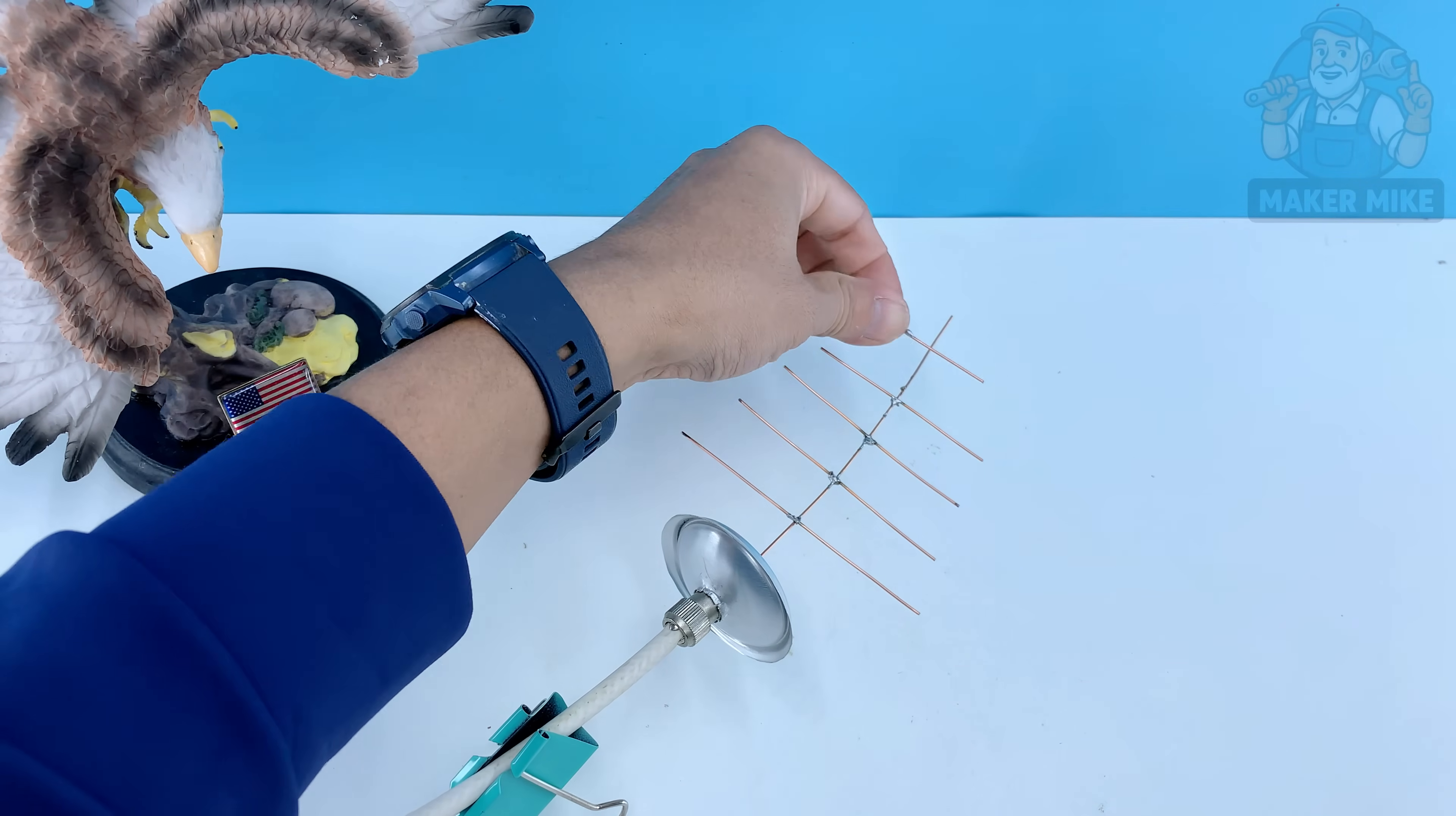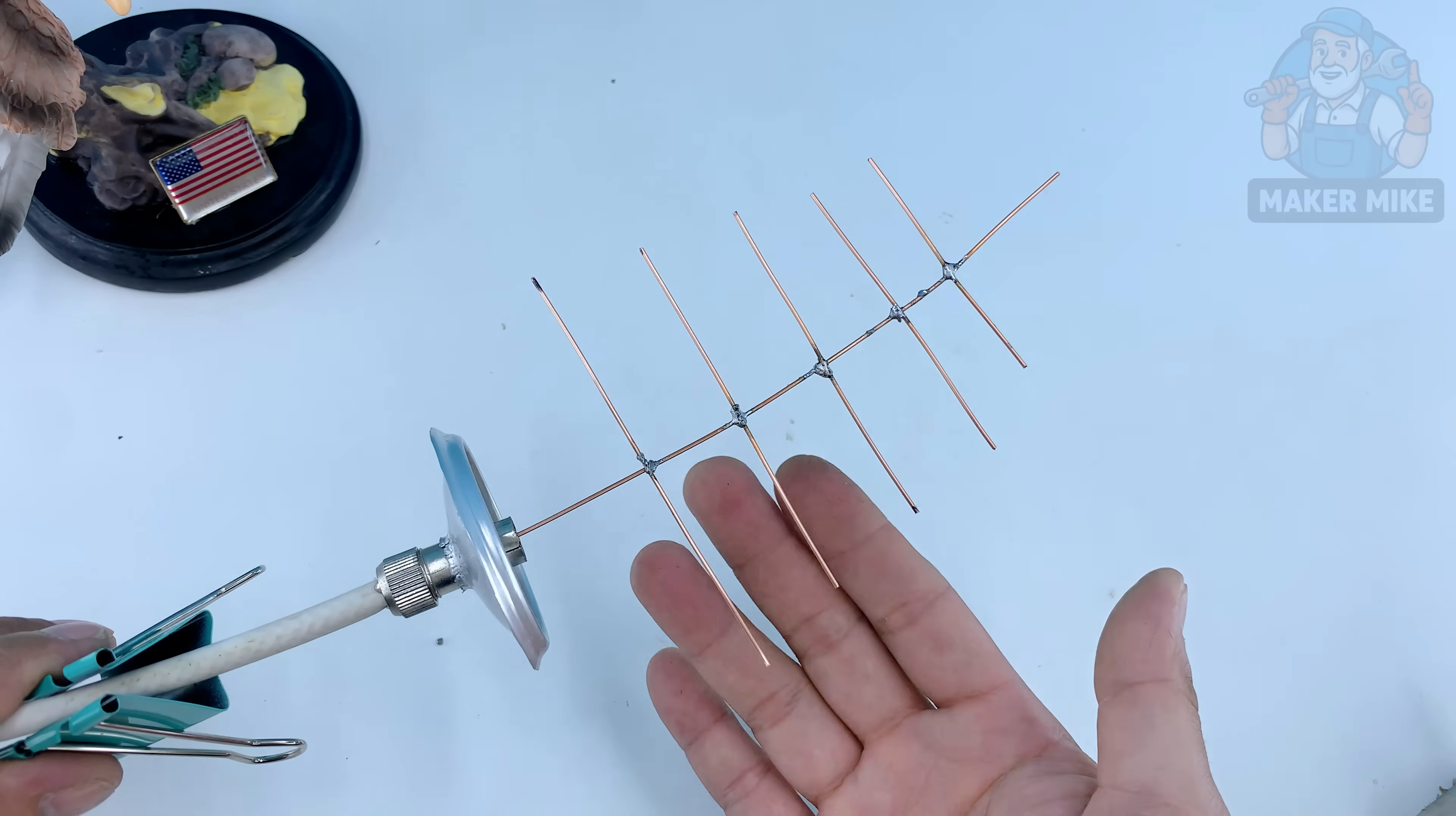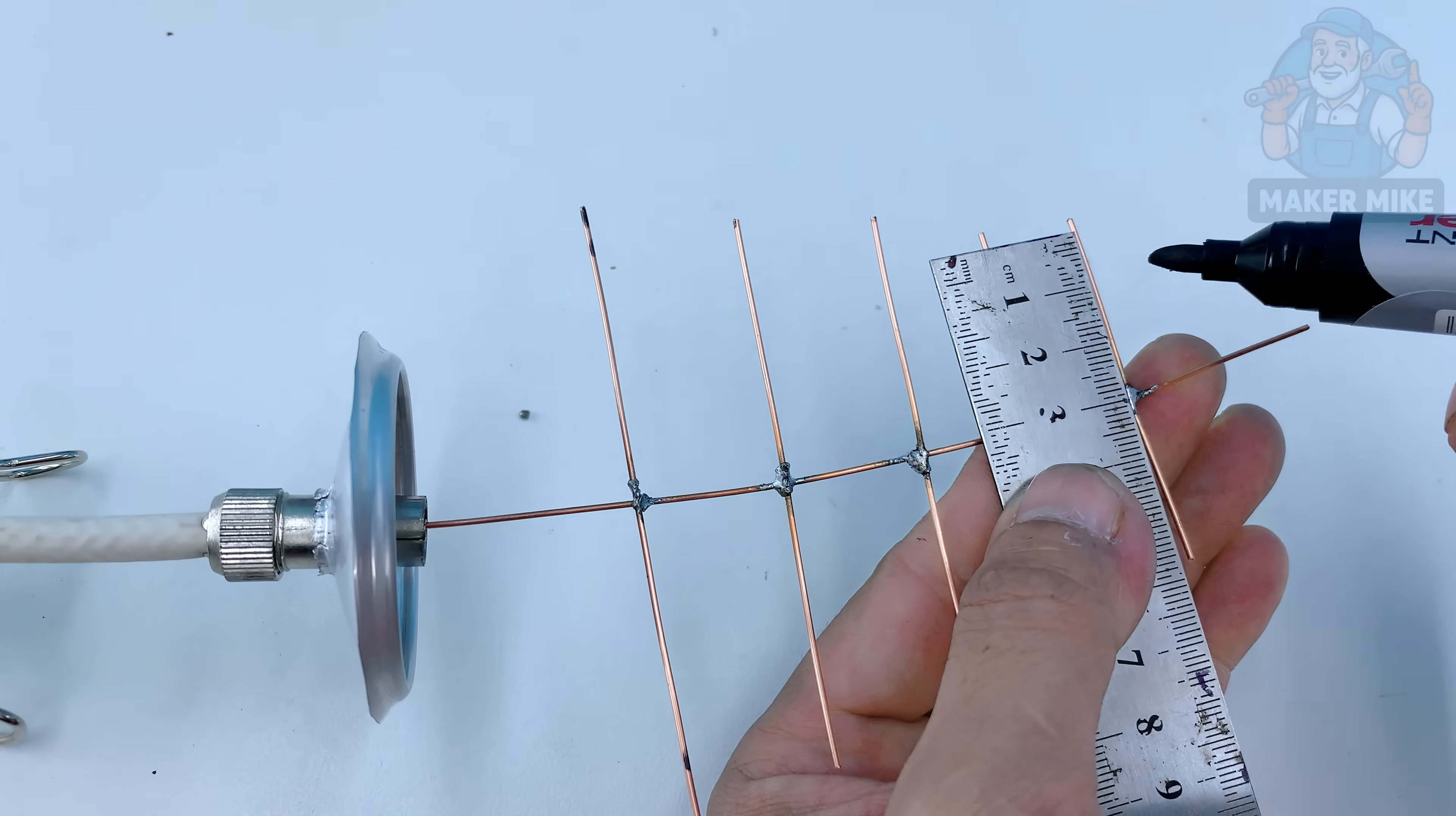Then move on to the next piece slightly shorter and repeat the process. Keep them spaced evenly along the coax core like the ribs of a small fan. This spacing helps capture different signal frequencies more effectively. A little trick that improves reception without needing fancy gear.